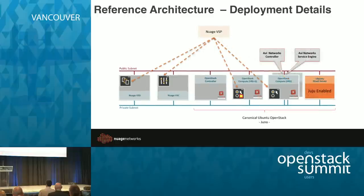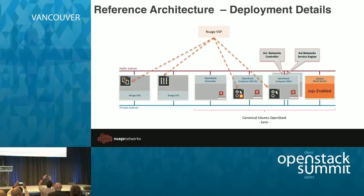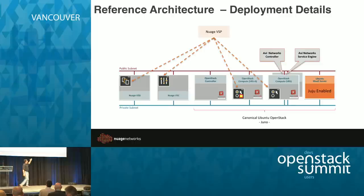The second setup is similar: you have the gateway for talking with the underlay network, and the Avi Networks controller and service engine running on a compute node. This runs on Canonical Ubuntu OpenStack, Juno release. What's differentiated here is that there is a Metal as a Service server that rolls out additional servers as load requires and scales as needed — that's one of the Ubuntu value-adds.